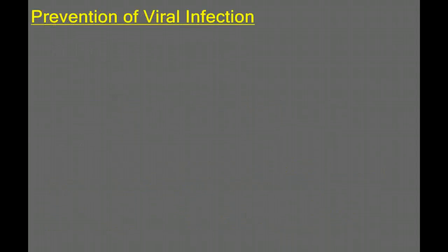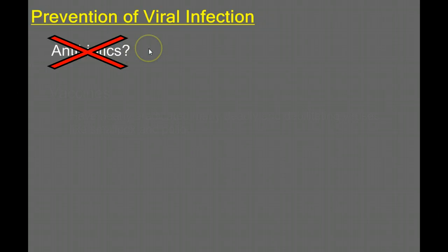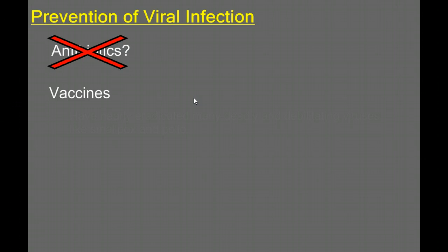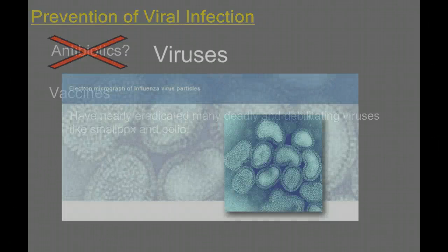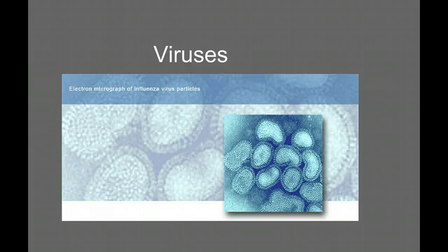So how do we prevent viral infection? It's tempting to say antibiotics, but antibiotics are antibacterial — we don't use antibiotics for viral infections. The best way to prevent viral infection is through the use of vaccines, where we inject a vaccine typically early in life to stimulate your immune system to respond more rapidly when later exposed to that viral infection. Vaccines have nearly eradicated many deadly viruses such as smallpox and polio. However, since viruses are constantly changing, developing vaccines for things like the flu and the cold — which are rapidly changing viruses — has proven more difficult. That does it for our introduction to viruses and viral replication. Make sure you review the differences between the lytic and lysogenic cycles and know your steps for viral replication.